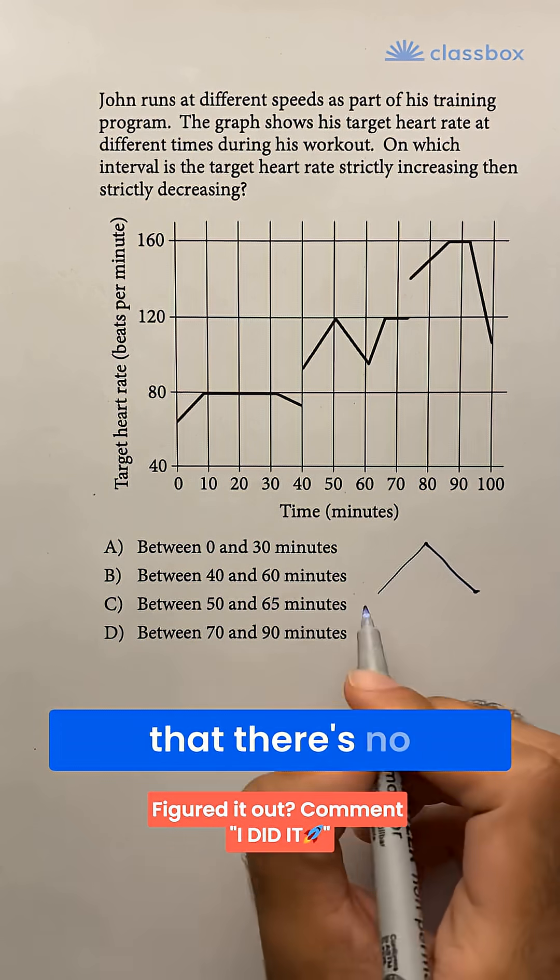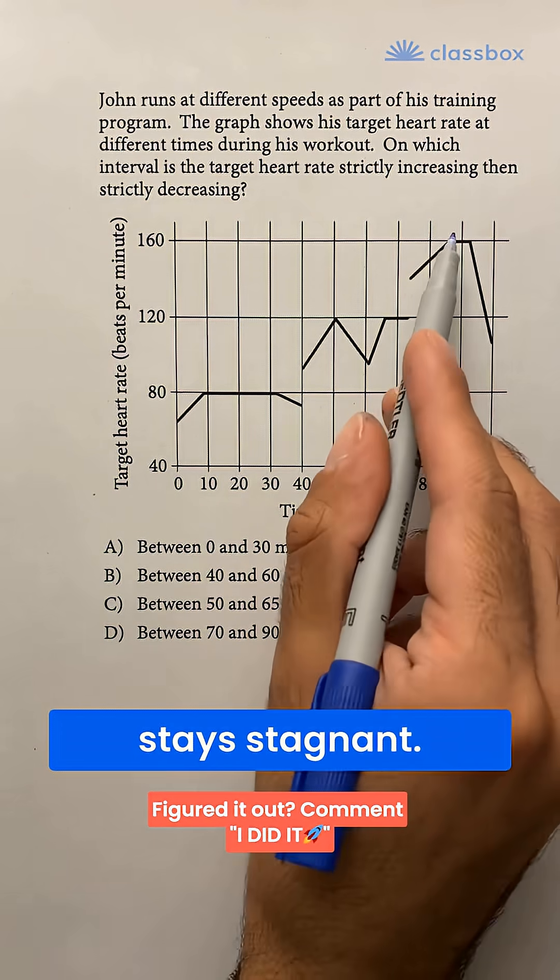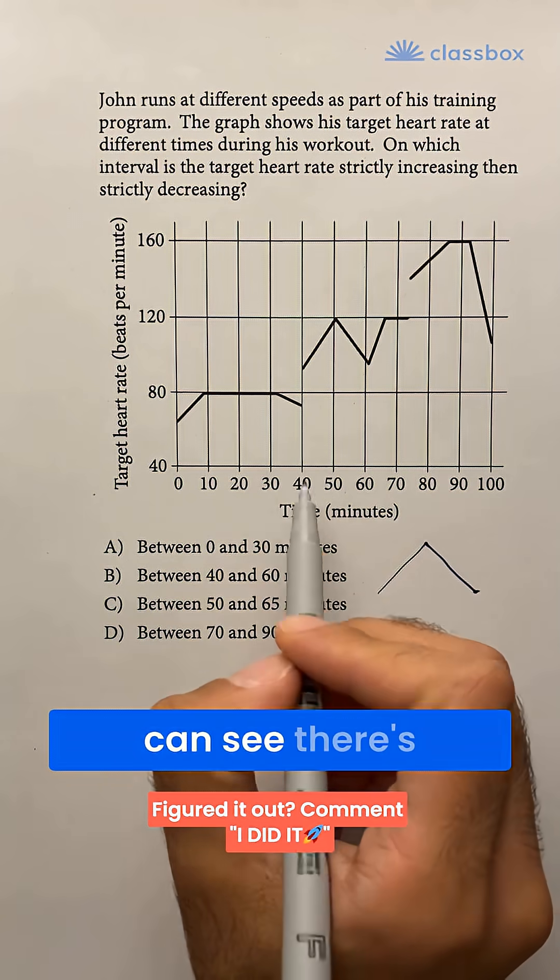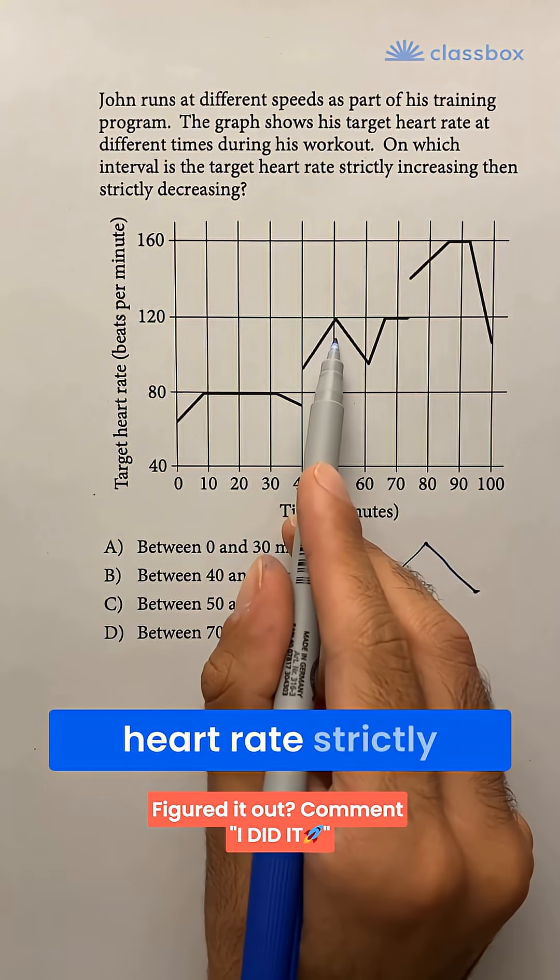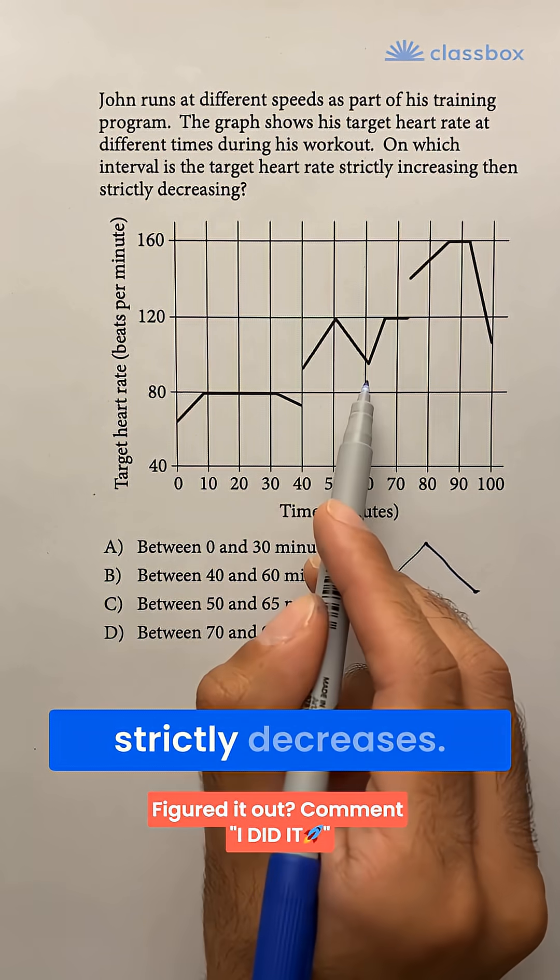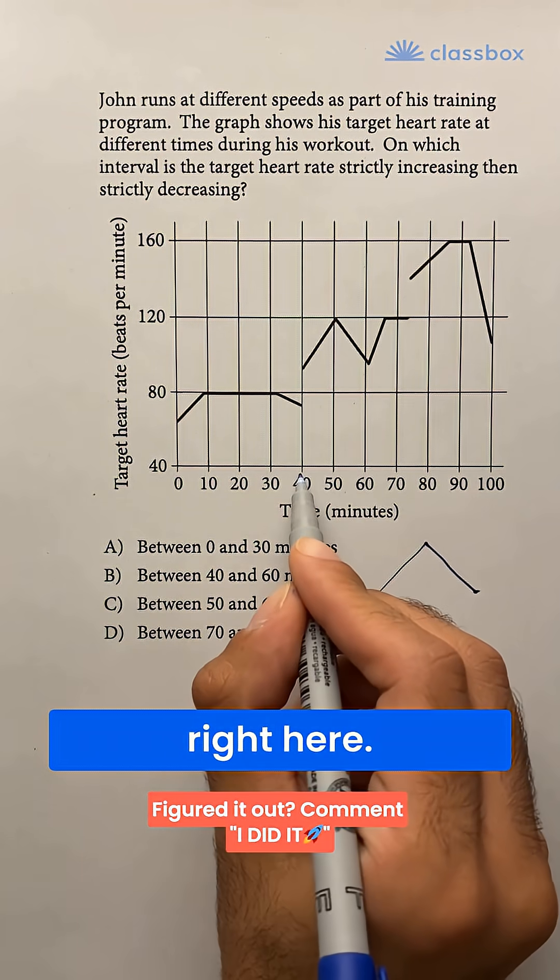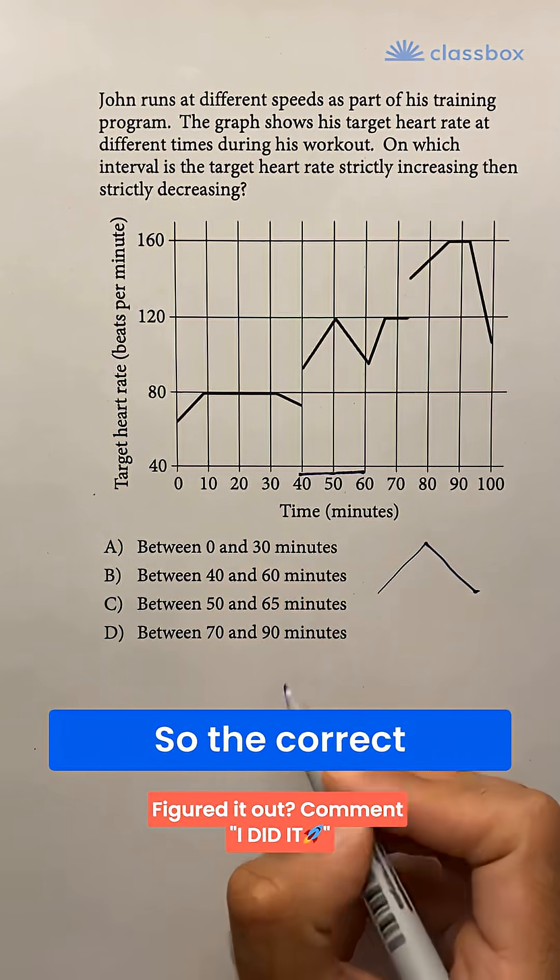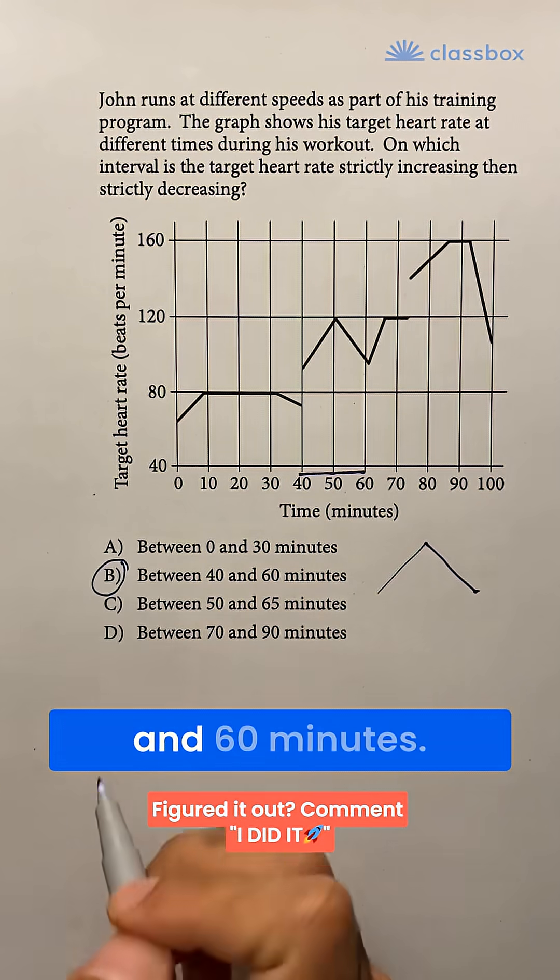Strictly means that there's no plateaus, there's no time where it stays stagnant. Looking at what we have here, we can see there's really only one place where the heart rate strictly increases and then immediately strictly decreases, and that's right here, between 40 and 60 minutes. So the correct answer is B, between 40 and 60 minutes.